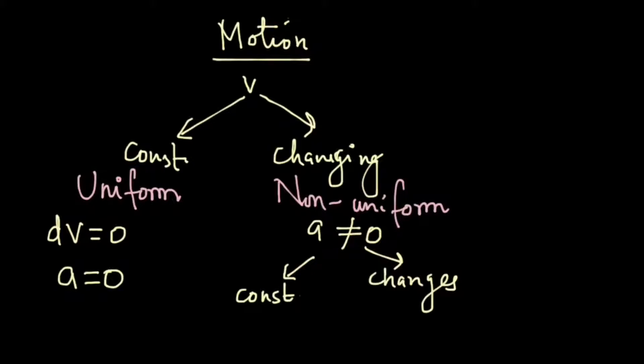When acceleration is constant it is a non-uniform motion, but we call it uniformly accelerated because what is constant here is the value of acceleration. So we call it uniformly accelerated motion.